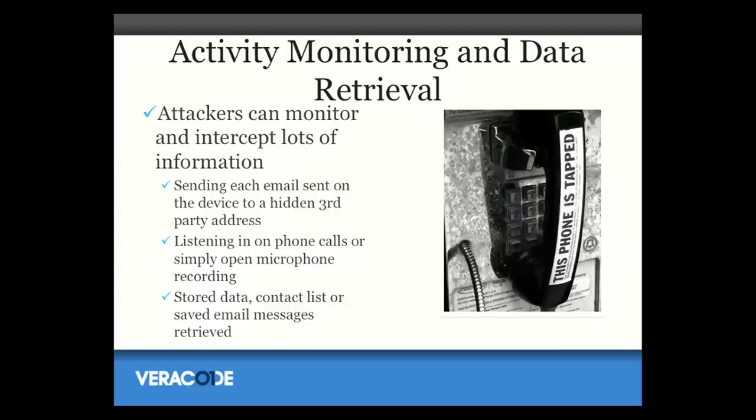Now I want to talk about what the malicious code is actually doing. One of the first types of malware you could consider spyware — it basically spies on the user. It collects emails and SMS messages, turns on the microphone, harvests the contact book, and sends it all off to someone else. This type of spyware exists on the PC, so it makes perfect sense for people to try to do this on mobile devices.